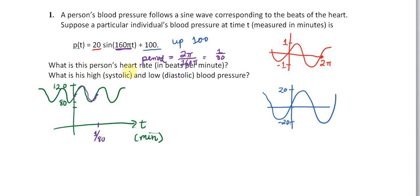So let's think here. What is the person's heart rate in beats per minute? Well, if we look at the sinusoid here, one period really does correspond to one beat. So we're going to say that this person's heart takes one beat every 1/80th of a minute.